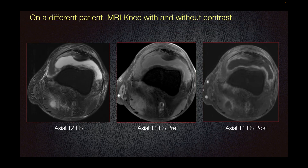MRI cannot differentiate septic from non-septic arthritis with accuracy, but it can suggest a difference between the two. For example, synovial thickening with associated soft tissue edema and bone marrow edema with enhancement suggests an underlying infective etiology, but it should be correlated with joint aspiration.